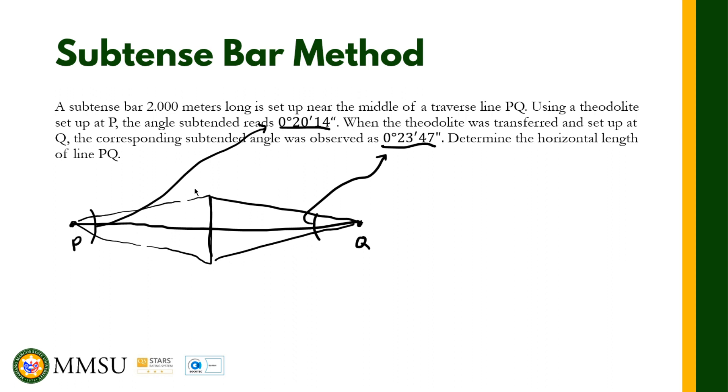We are going to compute for this horizontal distance. First we call this d sub 1, and then this second horizontal distance we call it d sub 2.